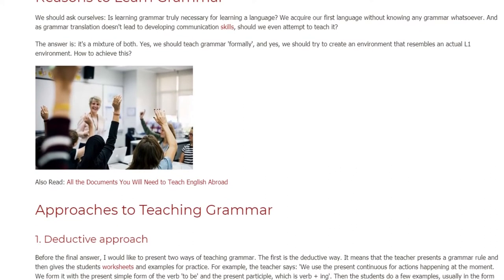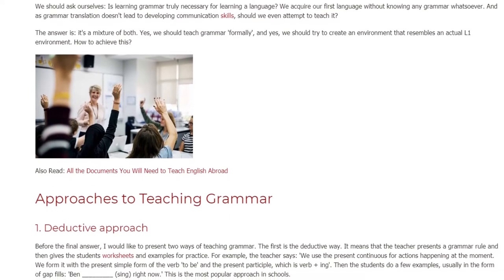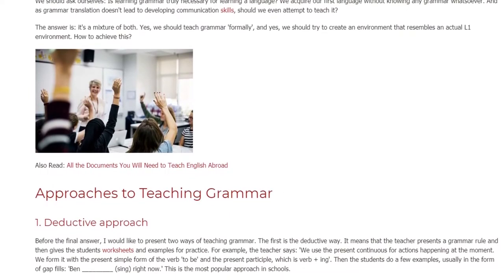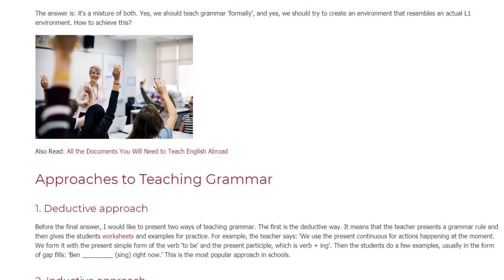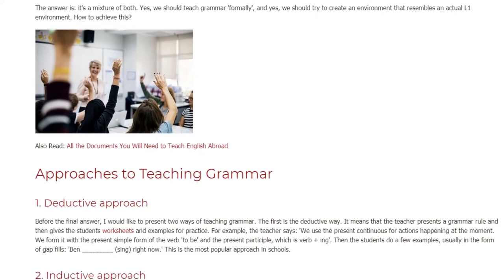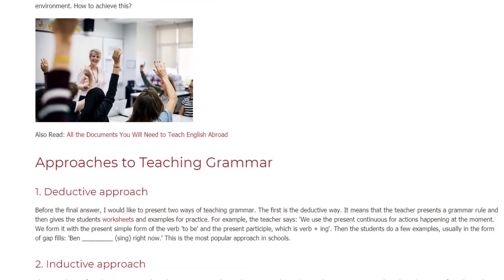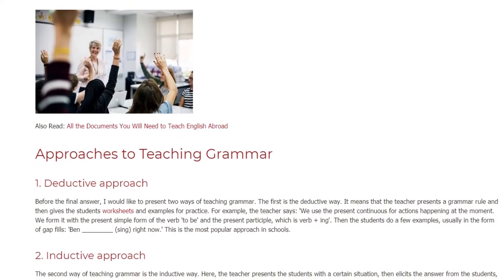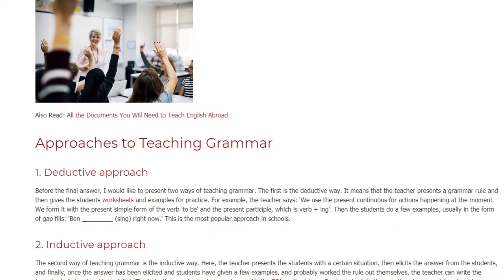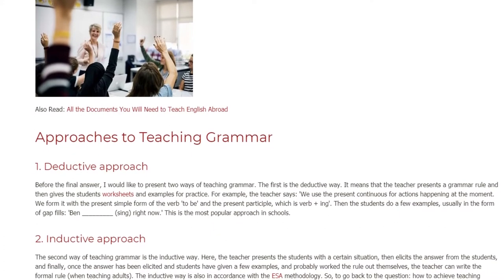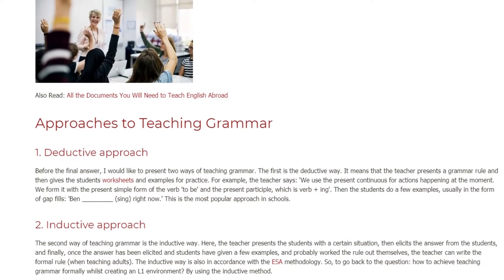The first approach is the deductive way. It means that the teacher presents a grammar rule and then gives the students worksheets and examples for practice. For example, the teacher says: we use the present continuous for actions happening at the moment. We form it with the present simple form of the verb 'to be' and the present participle, which is verb plus -ing.